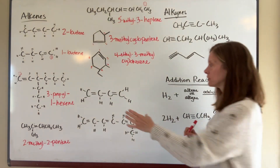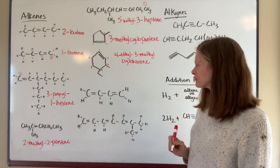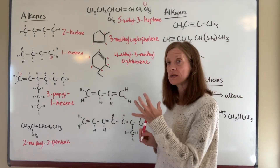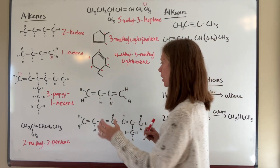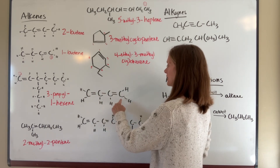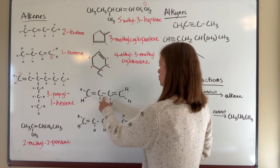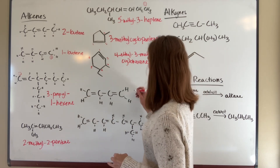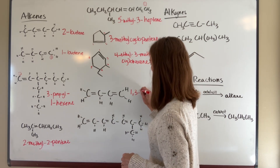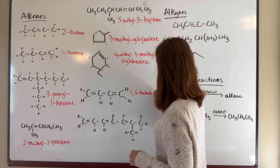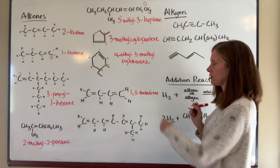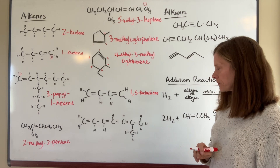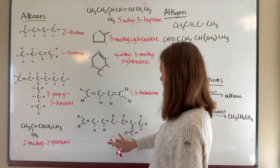It is possible to have two double bonds in the same compound; that's called a diene. Numbering gives the double bonds the lowest possible numbers. In this example, either end gives positions one and three, so the name is 1,3-butadiene. The prefix 'di' goes before the suffix to show there are two double bonds.